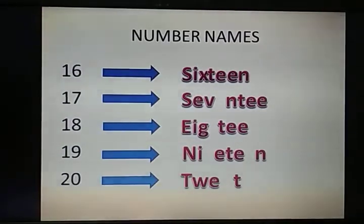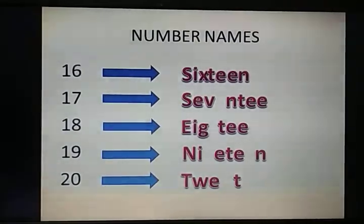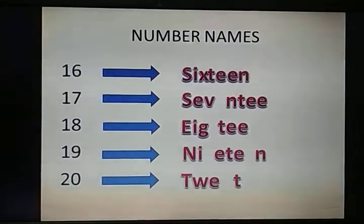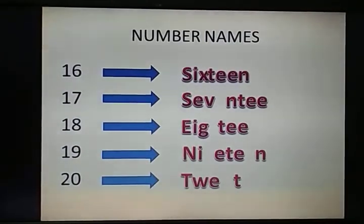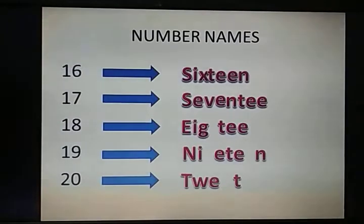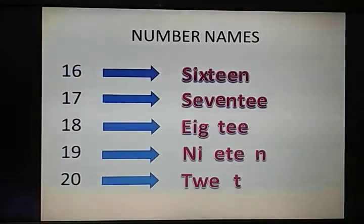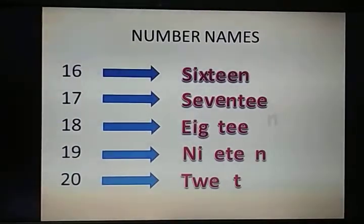Okay, what is the spelling of 17? 17 — S, E, V, E, N. So E is missing. E letter is missing. 17 — S, E, V, E, N, T, double E, N. N is also missing.